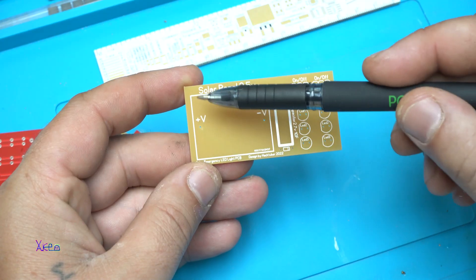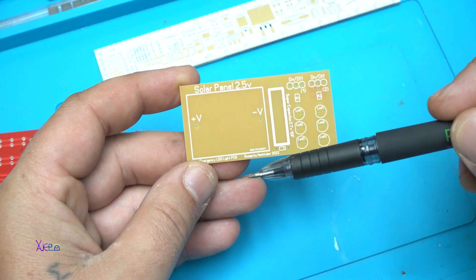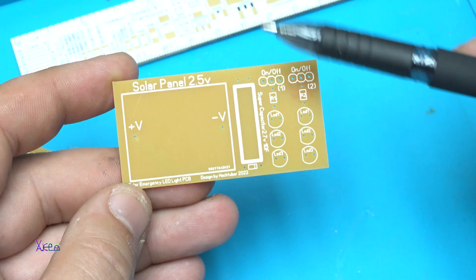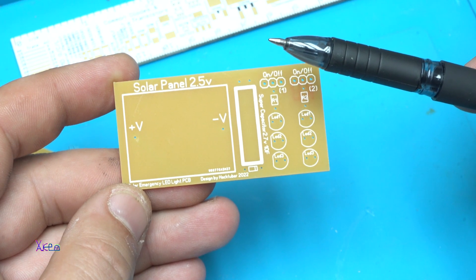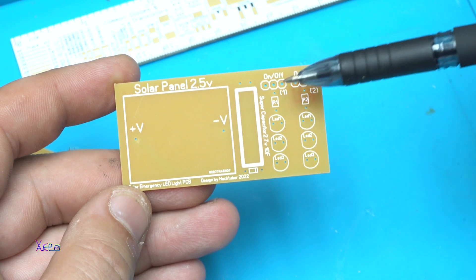Ok here let's place a solar panel 2.5 volts and here I will place the supercapacitor 2.7 volts and 10 farads, that is great, and two switches one and two.